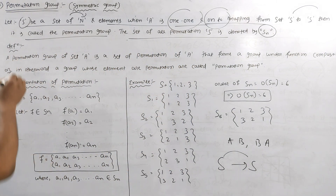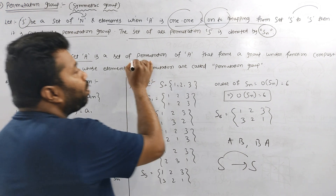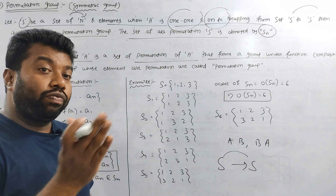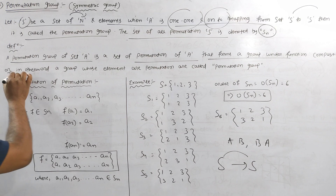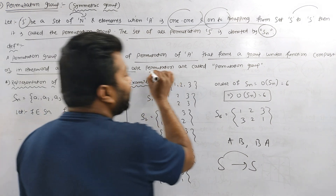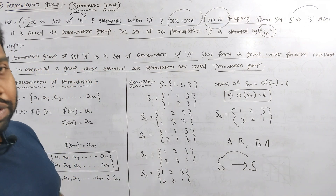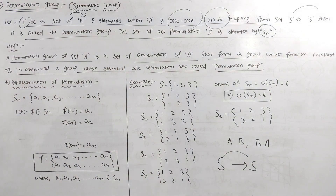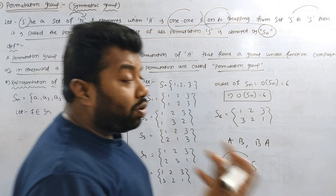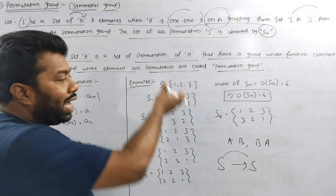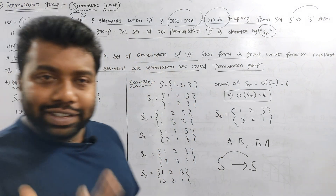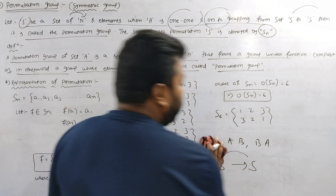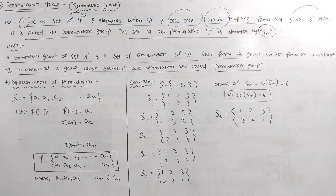The definition of permutation group: a set A that forms a group under function composition. In other words, a group whose elements are permutations is called a permutation group. The set of all permutations is called a permutation group. This concept of mathematics is very important.